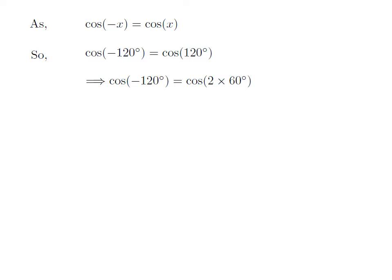As 120 degree is equal to 2 times 60 degree, cosine of minus 120 degree is equal to cosine of 2 times 60 degree. As we know, the trigonometry identity cosine of 2x is equal to 2 times square of cosine of x minus 1.